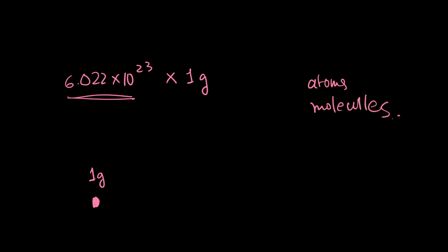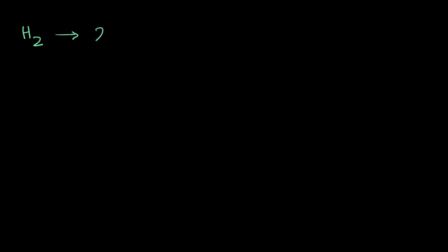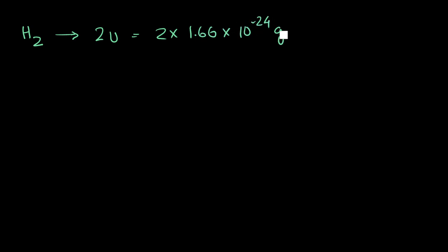Let us see how we can find the molar mass of atoms and molecules. For example, let us take a hydrogen molecule, H₂. Since there are two hydrogen atoms in one hydrogen molecule, it has a mass of 2u. Now 2u means 2 times 1.66 × 10⁻²⁴ grams — if you don't know where this came from, watch the video on atomic mass.